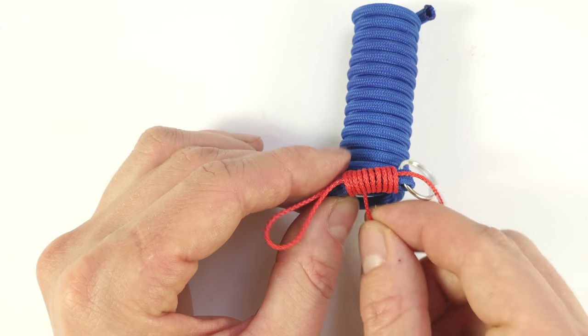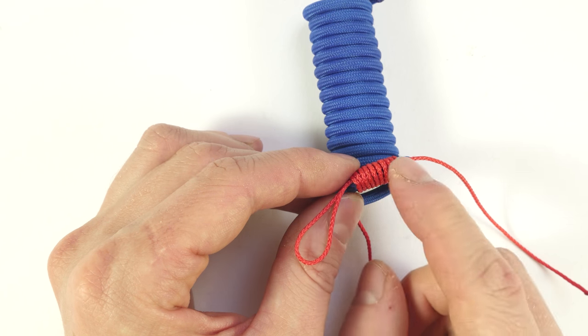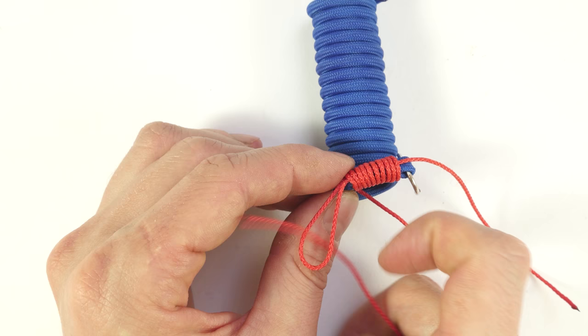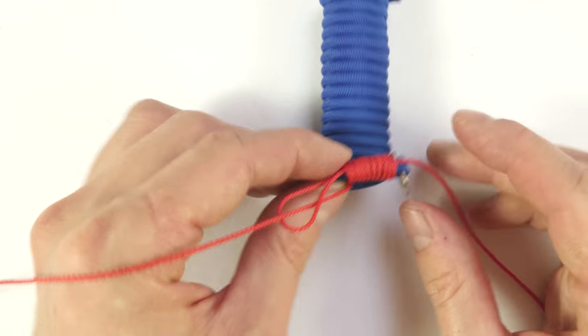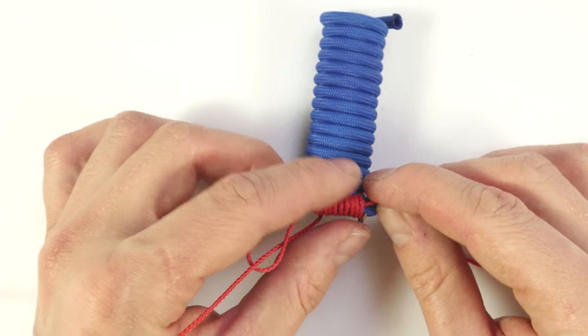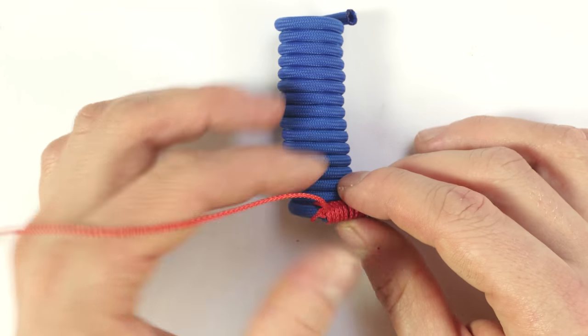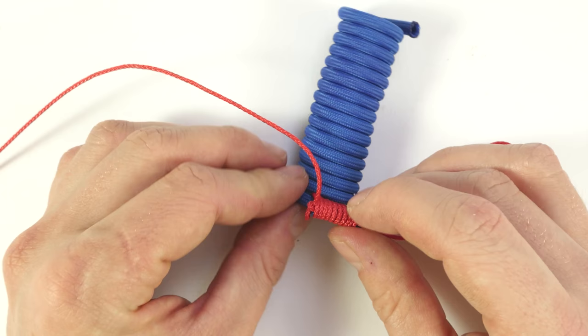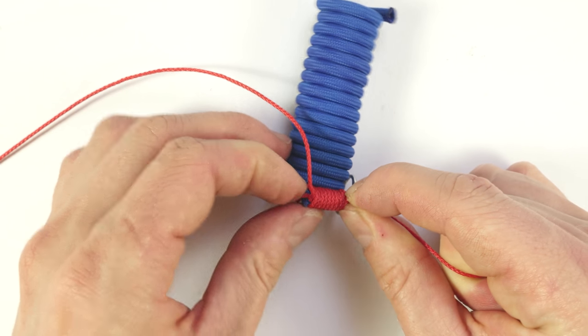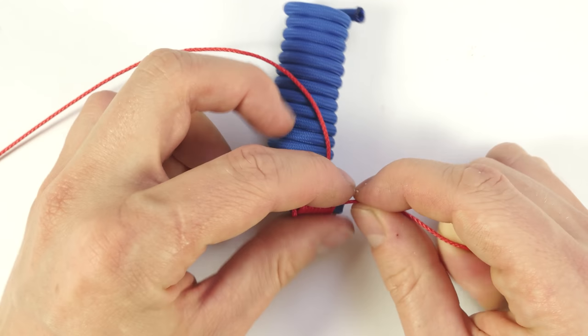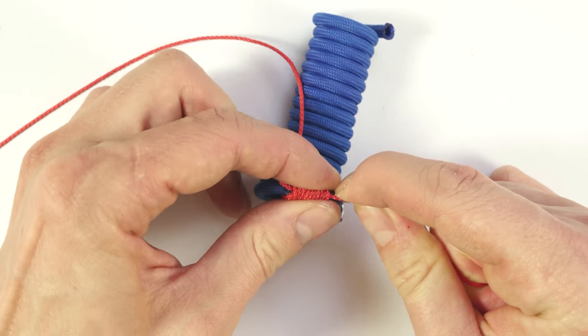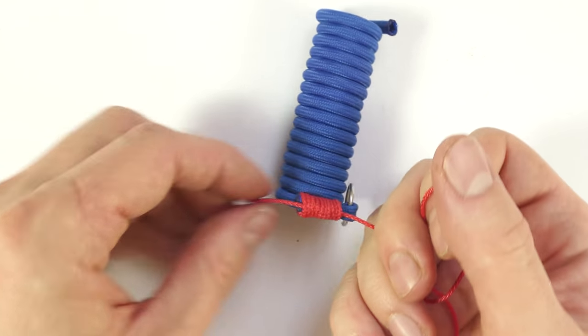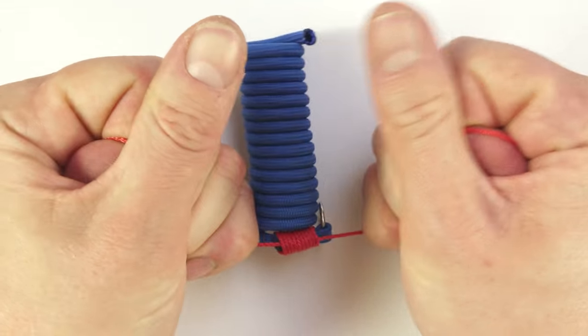When I am happy with the number of wraps, I take my working end, so the cord that I used to do the wraparounds, and I travel under and through the loop on the left. Then, using the right end, I pull in the loop, as well as the left end, under the wraps, to about the center of my wraps. So, about to the middle point. Like this. Then pull on both of the ends in order to secure the whipping.